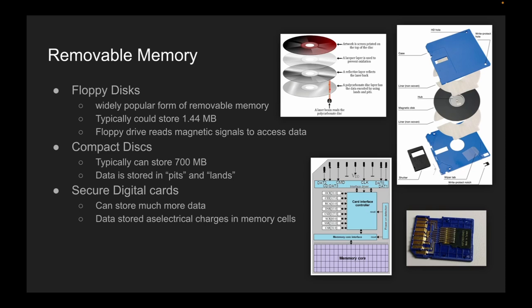The data on a CD is stored differently compared to other types of storage, because the data is stored in a series of pits and lands on the disk surface. Pits are little indents in the surface, and lands are the flat areas between them. The CD drive uses a laser to scan the surface of the disk and detect these pits and lands. The laser reflects off the aluminum layer, and the light reflected back is analyzed to determine the location and sequence of the pits and lands, which are then converted into digital data that can be understood by the computer.